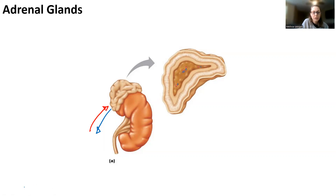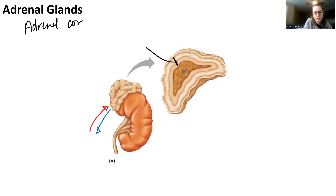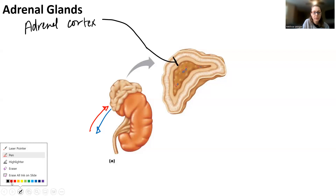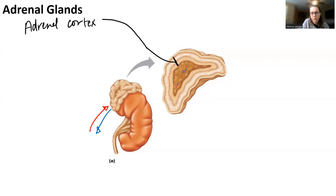The adrenal gland has two areas. The outermost area is the adrenal cortex. The adrenal cortex makes a series of hormones. The adrenal medulla is the middle portion, and it also makes a series of hormones.